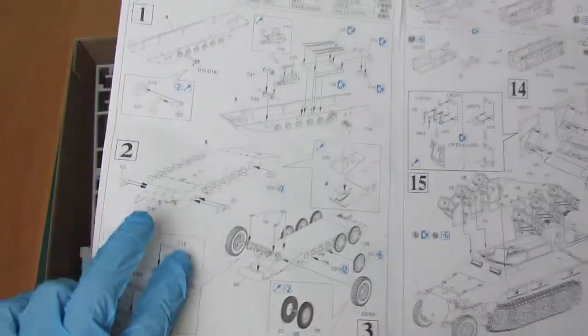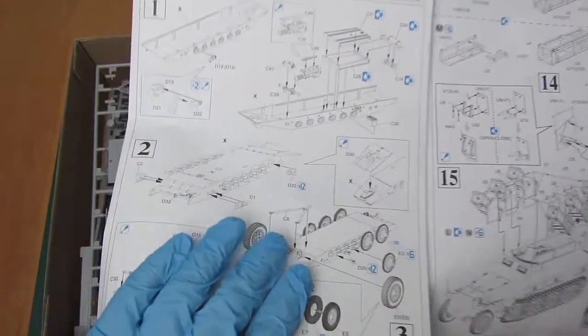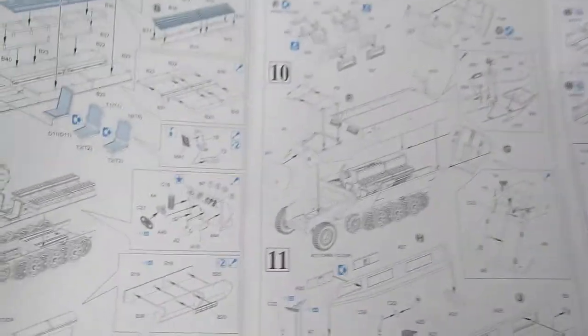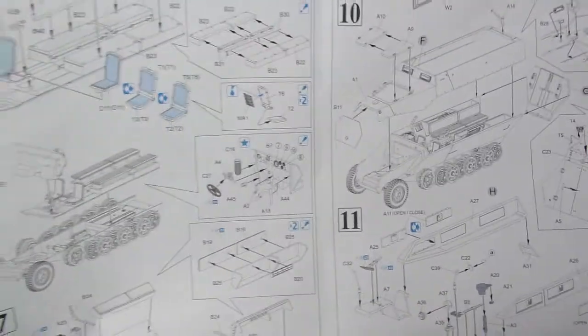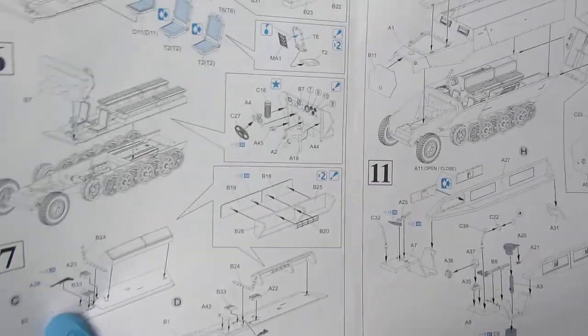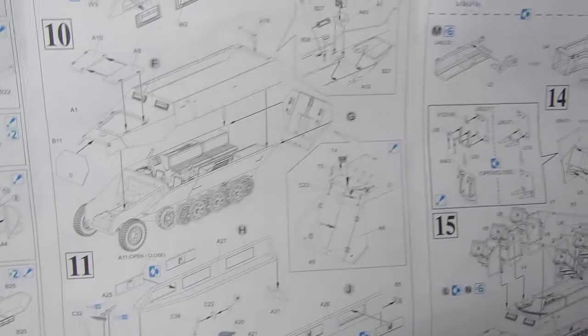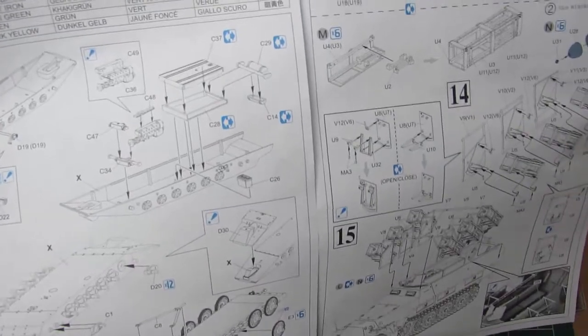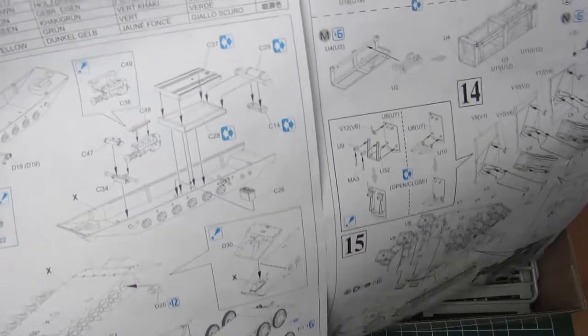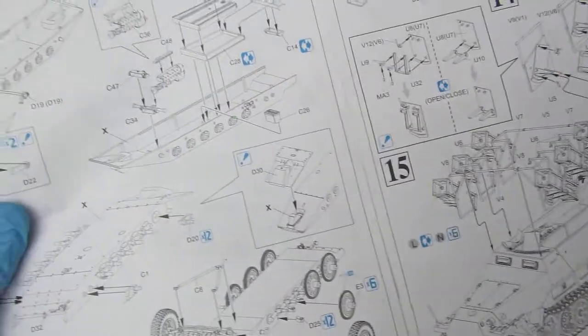Pierwszym z nich na pewno jest przednia oś skrętna. Nie wiem jak to będzie w przypadku gąsienic, bo nie składałem jeszcze nigdy takiego modelu, ani Sd.Kfz., ani z firmy Dragon. Widzę już kolejny element ruchomy, czyli sam montaż karabinu maszynowego, też ruchomy. Naprawdę można go zrobić w miarę ruchomy model.